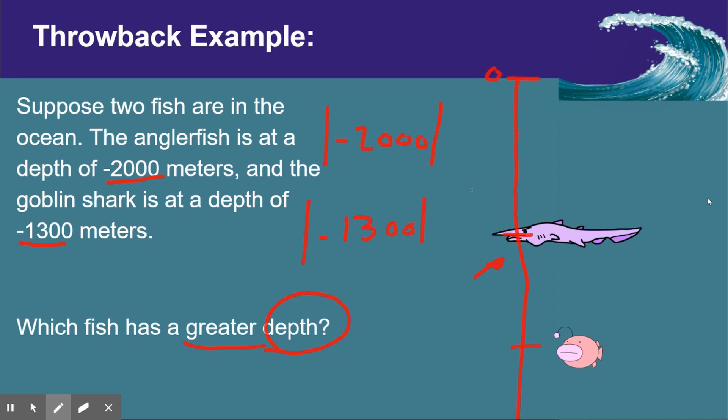We can say that the depth of both of these are going to be 2,000 meters and 1,300 meters respectively. If we now compare them, we can say that 2,000 meters is greater than 1,300, which means that the angler fish has a greater depth. So a little bit different in terms of the kinds of words we use. And that'll determine whether or not we need to use absolute value to help us think about this.